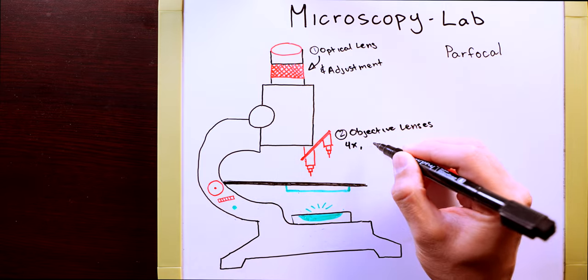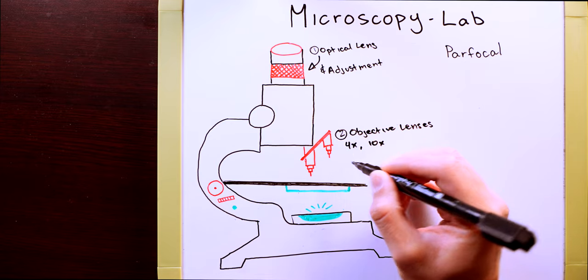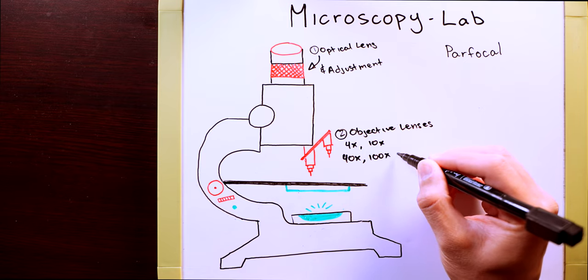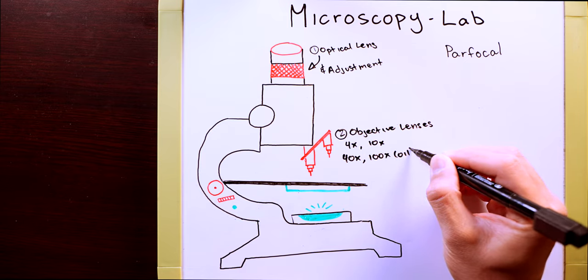And moving down from your optical lens, you're going to have your four objective lenses: a 4x, a 10x, a 40x, as well as a 100x oil immersion.